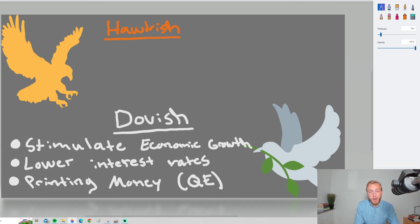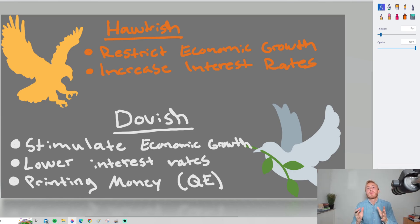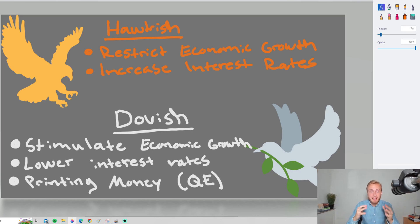So what is hawkish? It's pretty much the opposite of dovish — it's a stance that wants to restrict economic growth. By doing the opposite of dovish, we can increase interest rates. When interest rates go up, it's more costly to borrow, which leads to fewer people borrowing money and buying goods and services, driving down economic growth and hopefully slowing down inflation. The Federal Reserve, the largest central bank in the world, is currently pretty hawkish because of the significant inflation problem.